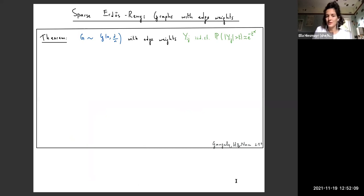This is the statement of our result. We start off with a graph that has sparsity d over n. The edge weights are IID such that the probability that the edge weight in absolute value is larger than t is e to the minus t to the alpha, approximately. This means that when alpha is larger than 2, we have lighter tails than Gaussians. And when alpha is smaller than 2, we have heavier tails than Gaussians.